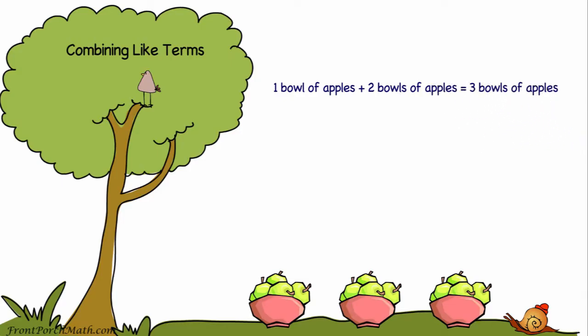In algebra, we could use the letter A to represent the number of apples, and the number in front of the variable would represent the number of bowls or groups of apples that we have. The expression would then look like 1A + 2A = 3A. We could have written that as A + 2A = 3A, because when we say bowl of apples, we don't need to specifically say one bowl. It's just understood. The same is true in algebra. If there's no number in front of the variable, it is always implied that there's a one there.